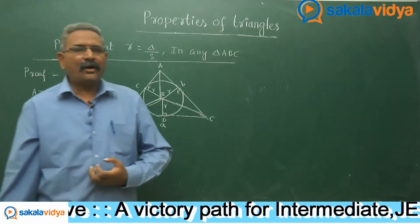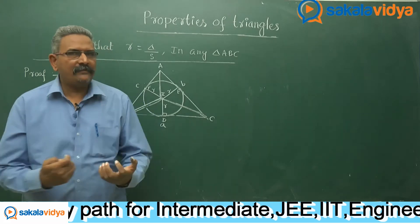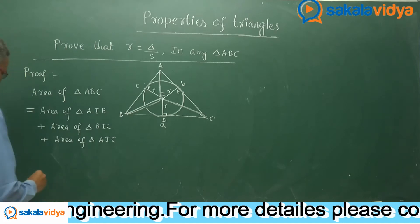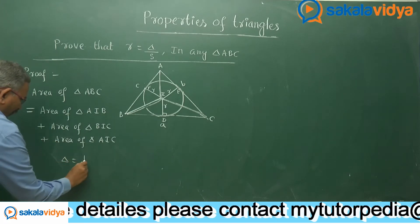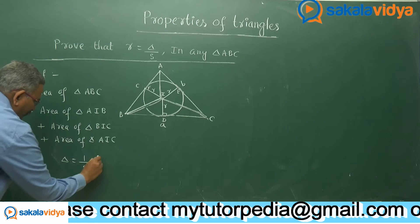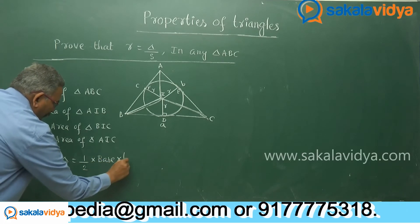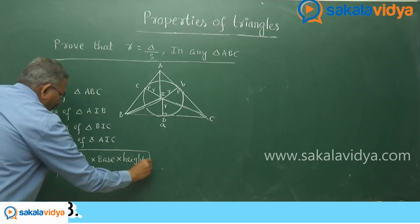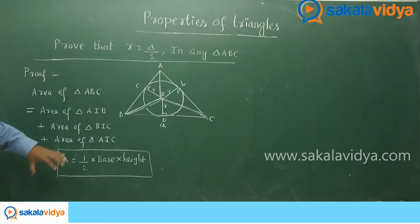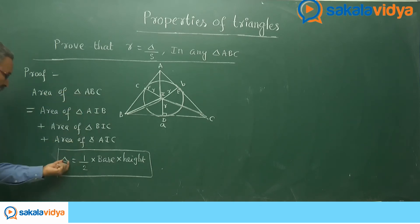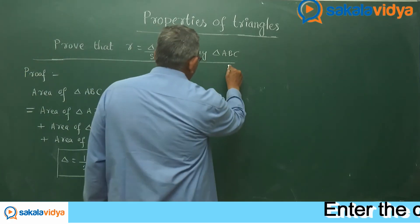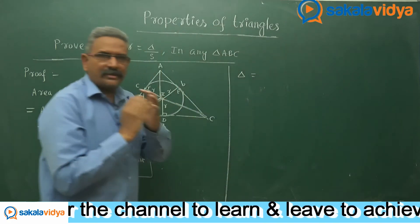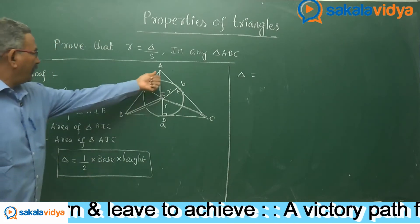We need to recall how to calculate the area of a triangle. The area of the triangle is delta. So now let us write: delta equals the area of triangle AIB. Here, the base is AB and the height is ID.